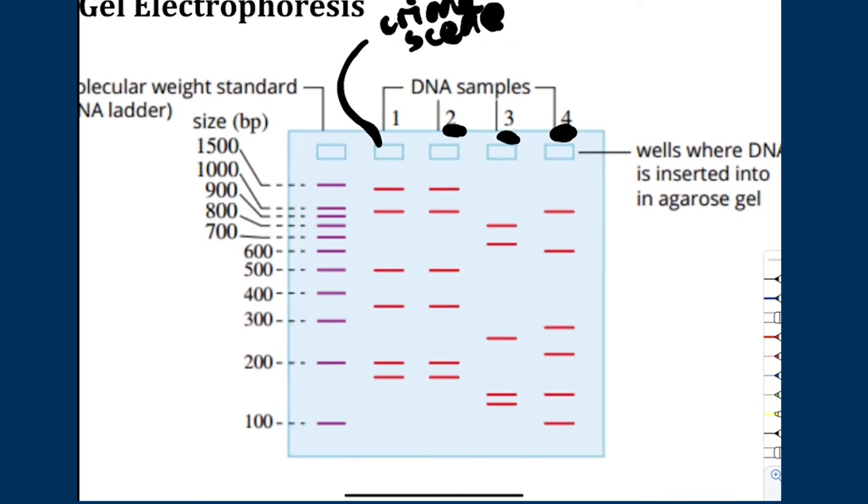Right? But imagine if we had one band like that and another individual had this band. It's very common for many individuals to have similar sized DNA, and you could actually end up with another individual also having that same band.